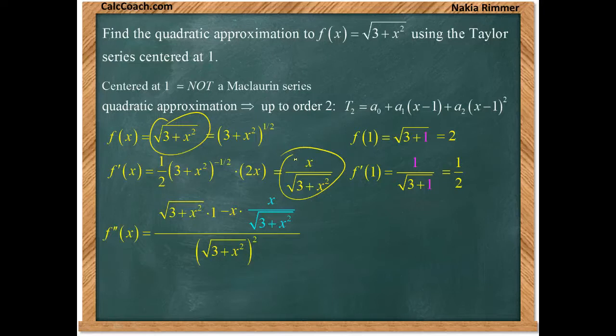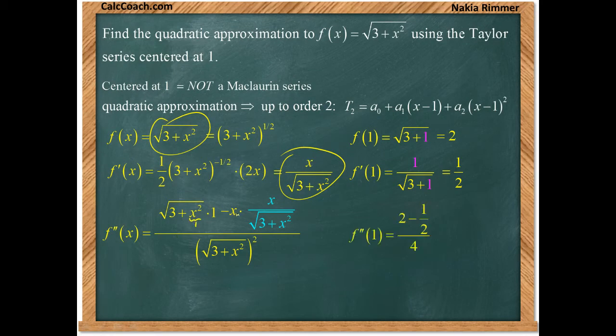Now for the second derivative, replacing with 1's is a little bit more involved. We put a 1 in here, we get a 2. We put a 1 in here, and we get a half again. In the denominator, with the square and the square root canceling out, we put a 1 in here, and we get a 4.